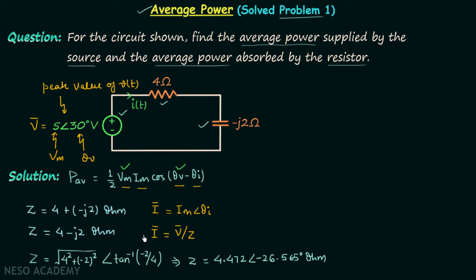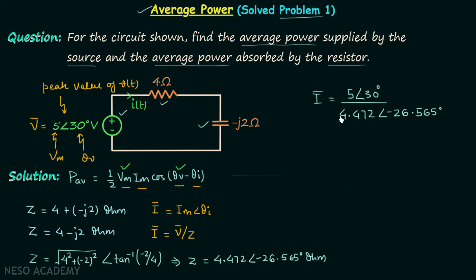Now we will calculate the current phasor. From Ohm's law, I phasor equals V phasor divided by impedance. So I = 5∠30° divided by 4.472∠−26.565°. Solving this, the current phasor equals 1.118∠56.57° amperes.